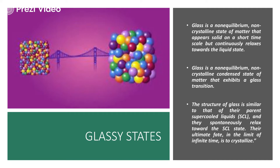Below the transition temperature and above the transition temperature there are two separate phases. Below the transition phase comes the solid phase and above the transition phase comes the liquid phase. So when the solid phase changes into the liquid phase, there comes a temperature at which the glass is formed. Below this stage the glass is in the solid form, and above this stage glass moves towards a liquid phase transition.